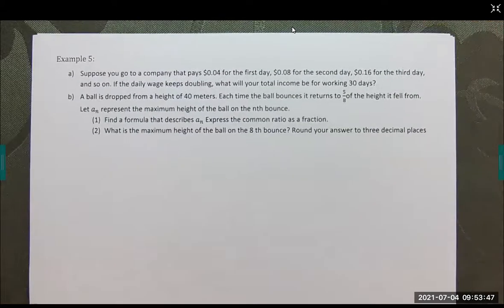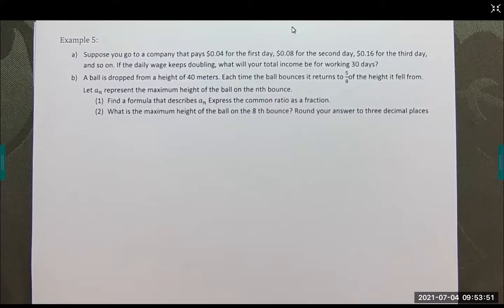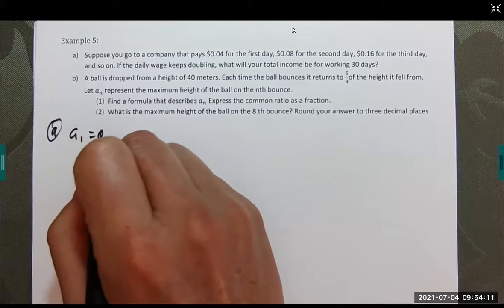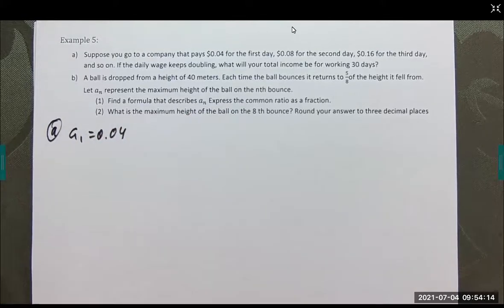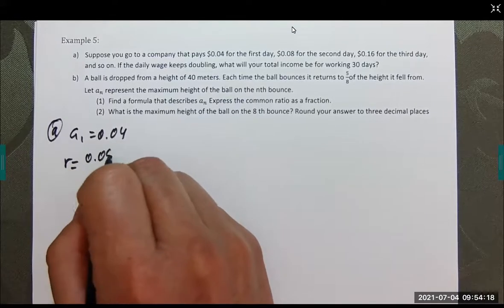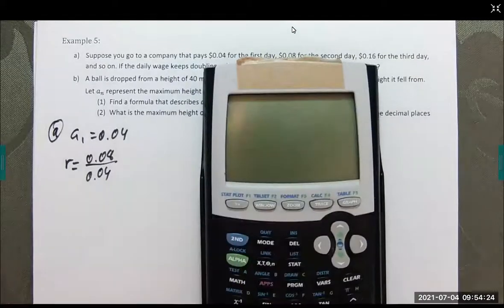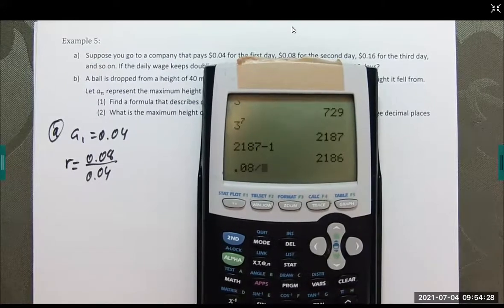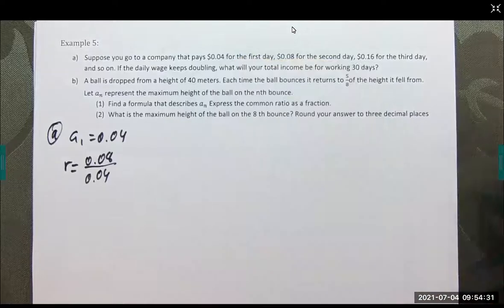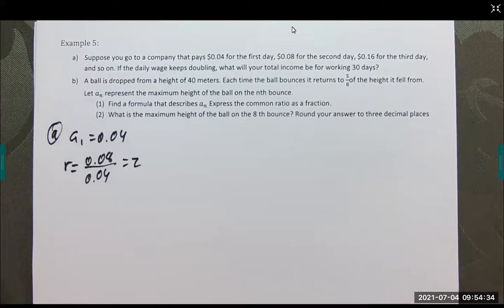Last part. Here's some applications. Suppose you go to a company that pays 4 cents for the first day, 8 cents for the second day, 16 cents for the third day and so on, which keeps doubling your total income for working 30 days. Let's start with part A. A sub 1 is 0.04. R is 0.08 over 0.04, which is 2.